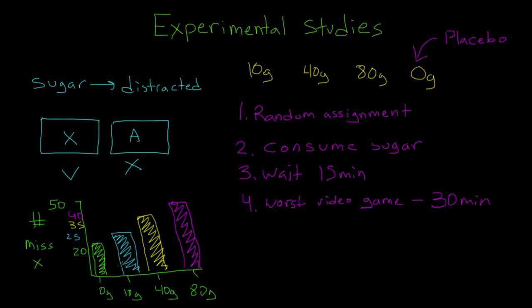So our 10 gram sugar group missed the least amount of x's, though still more than the no sugar condition. The 40 group missed more than the 10 gram group. And the 80 gram group, those kids missed more than all of them. So in this study, I would say that the kids were most distracted in the 80 gram sugar group.